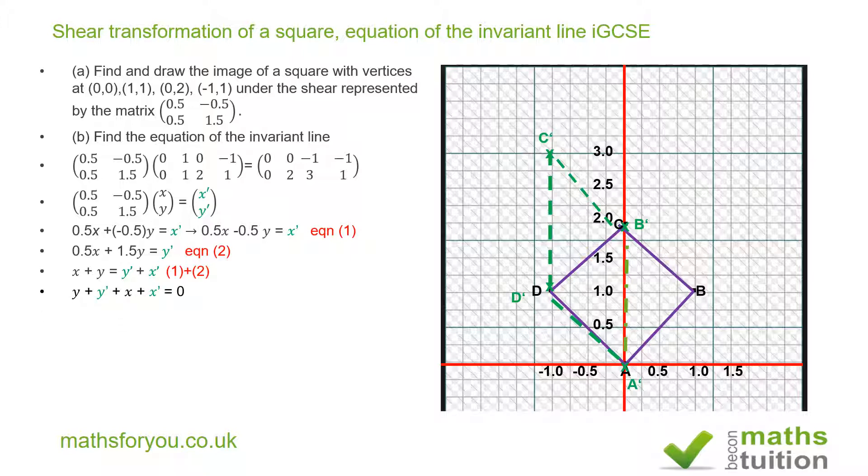If x' equals x and y' equals y, we end up with 2x + 2y = 0, in which case x + y = 0, in which case y = -x. So the equation of the invariant line is y = -x.